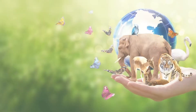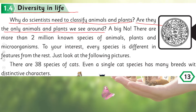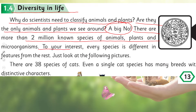Now it's time for reading. Open page number 13 in your Science for Life book. 'Diversity in Life: Why do scientists need to classify animals and plants? Are they the only animals and plants we see around us? A big no — there are more than two million known species of animals, plants and microorganisms. Every species is different in features from the rest.'